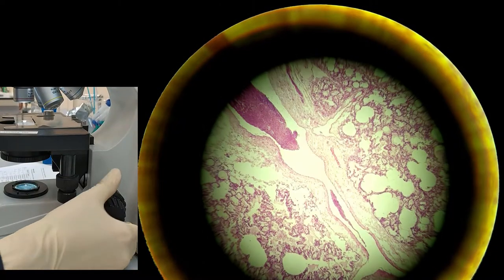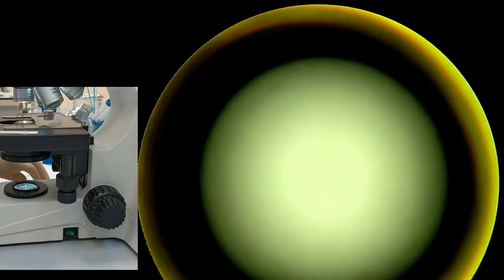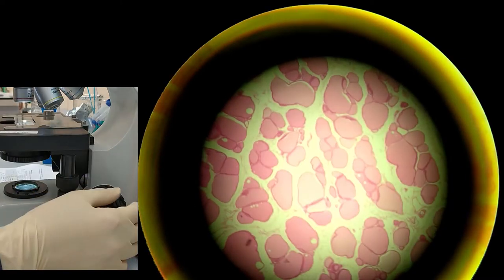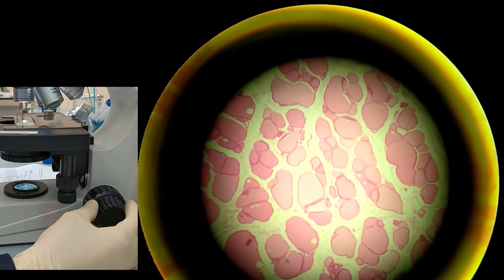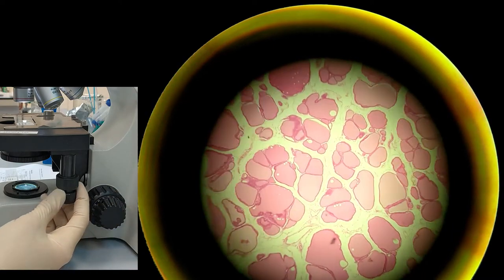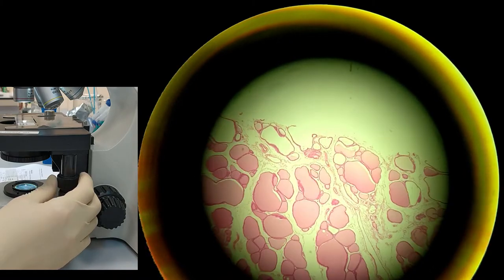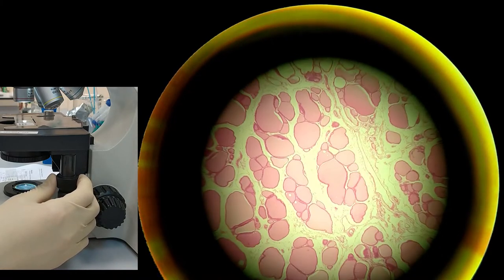So again we switch to the 4x and we can change the slide to the next one. Next we have simple cuboidal epithelium. Now we can see everything that is needed for drawing and it is almost in focus.